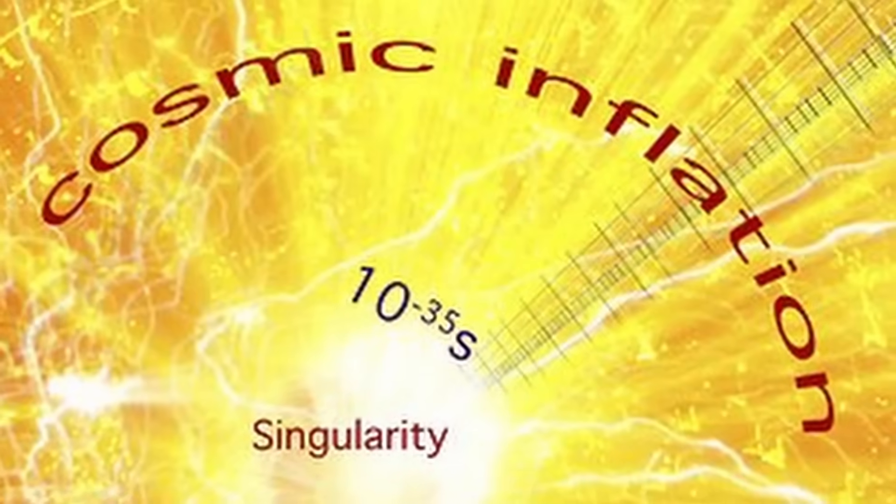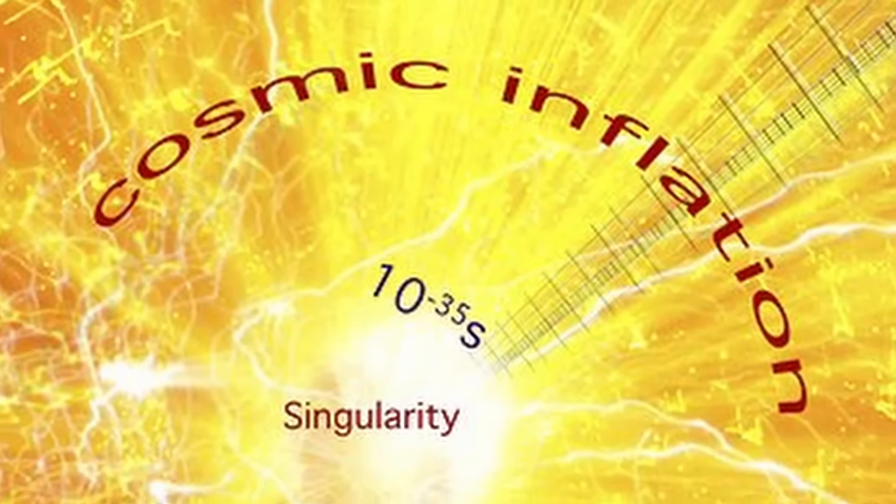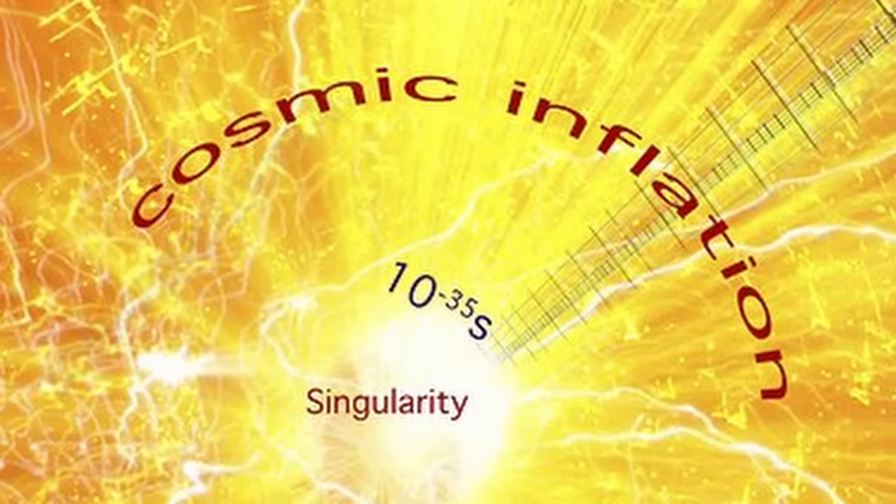The time period occurring before the first 10 trillionth of a yoctosecond after the singularity state is known as the Planck era. Physicists estimate the Planck era reached mind-boggling temperatures of around 180 trillion quintillion degrees Fahrenheit. However, this is purely theoretical. No one can measure it directly.